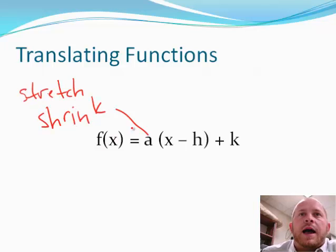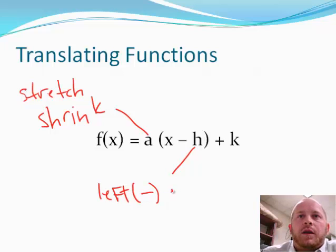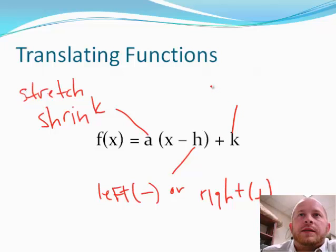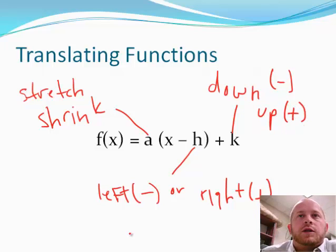The h here is going to tell you whether or not you're moving it to the left, which is a negative number, or to the right, which is your positive number. The k on the outside of your equation is going to tell you if you're going down, which is your negatives, or up, which is your positive number. So if you look at these three different parts, this is what we're going to use to translate our function or move it around on our graph.